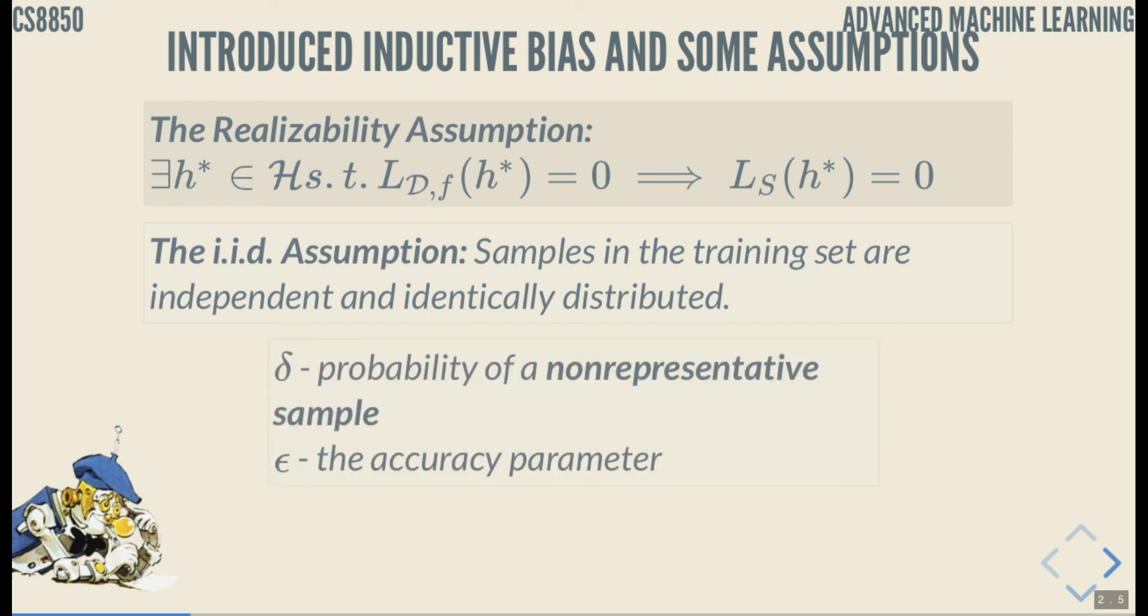We also introduced two numbers, delta and epsilon. Delta is probability of a non-representative sample. That is probability of a learner returning the best possible classifier on the training set, but the training set is non-representative, so our true loss is not going to be good at all, no matter what you do. And epsilon, the accuracy parameter. Epsilon is just a factor for all kinds of uncertainties. We cannot hope to achieve the best possible accuracy, error of zero, so we keep that epsilon. And then what that means is we define a failure. Our failure is when the true loss is more than epsilon, and our success is when the true loss is less than or equal to epsilon.